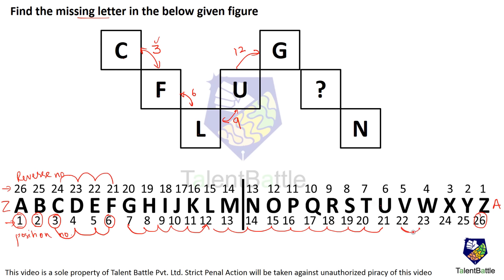Counting 12 steps from U cyclically — 1, 2, 3, 4, 5, 6, 7, 8, 9, 10, 11, 12 — which is nothing but G.